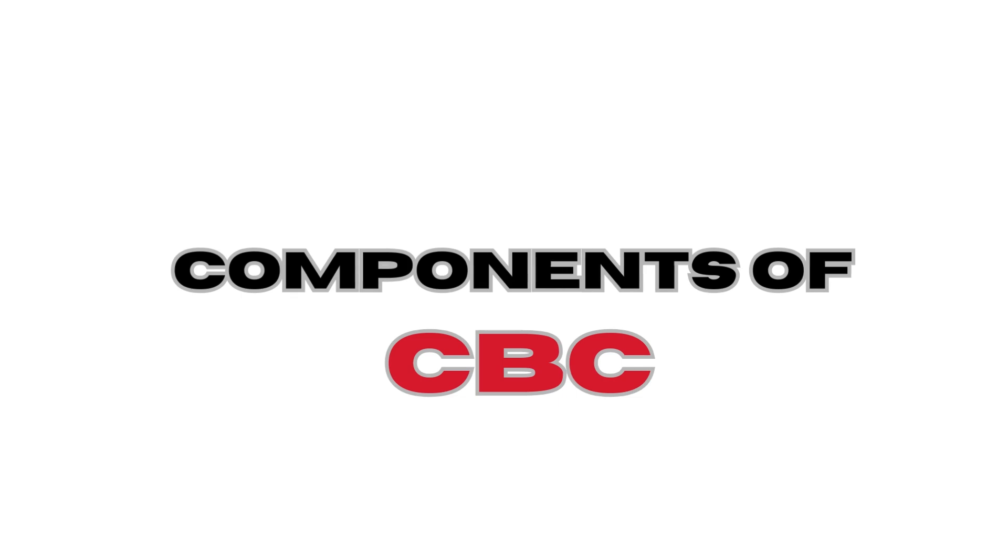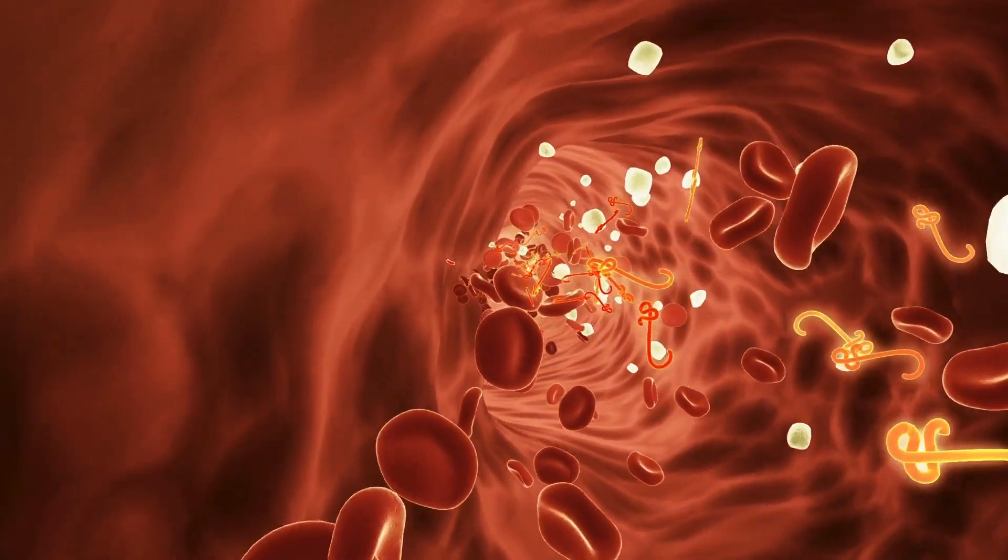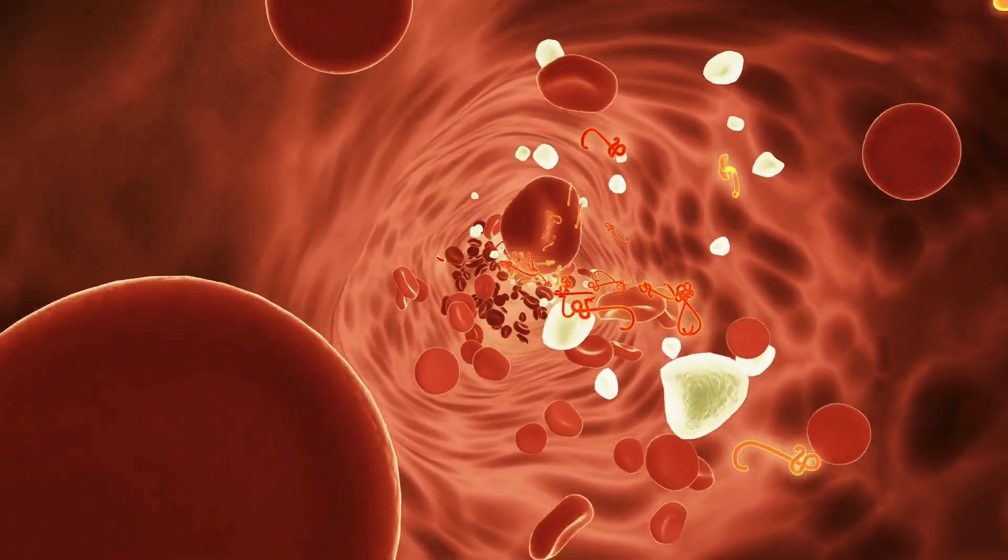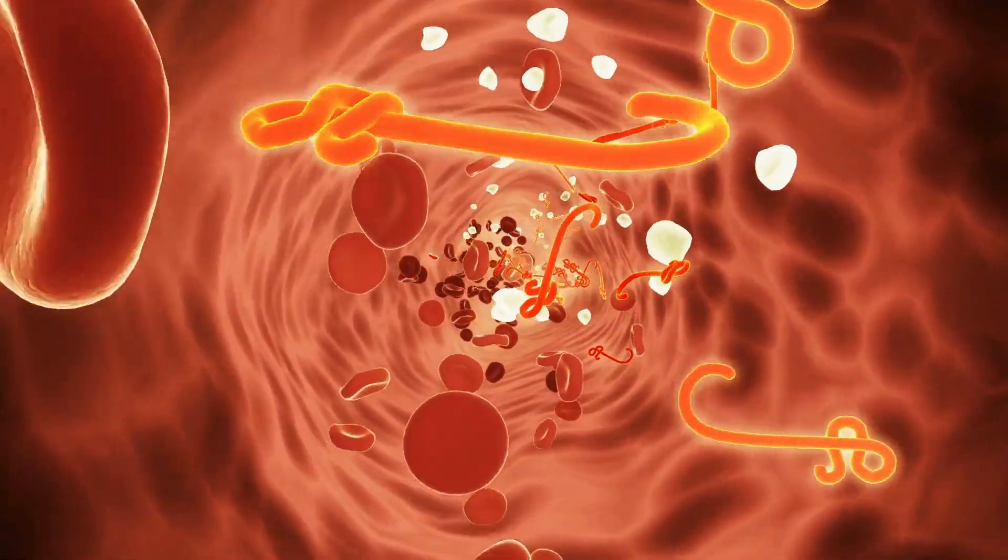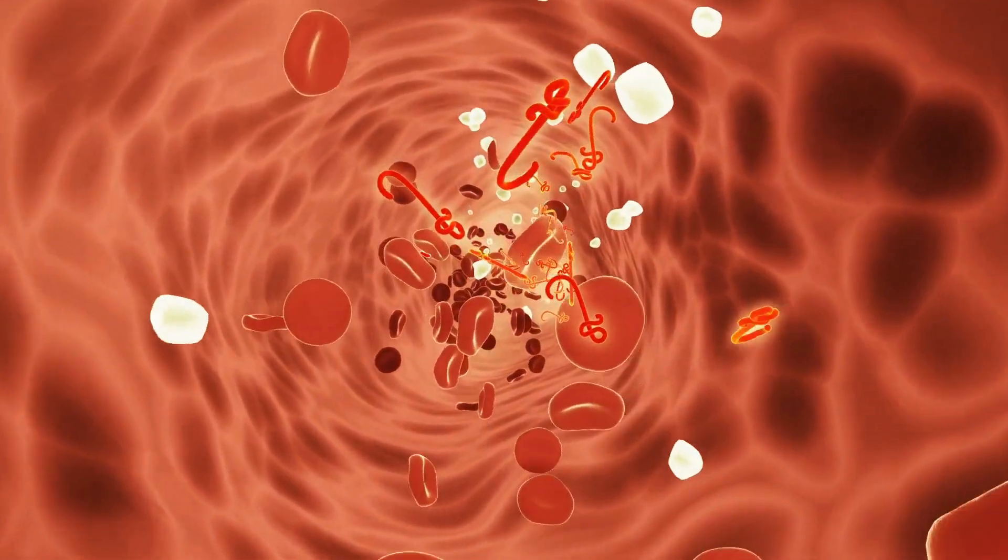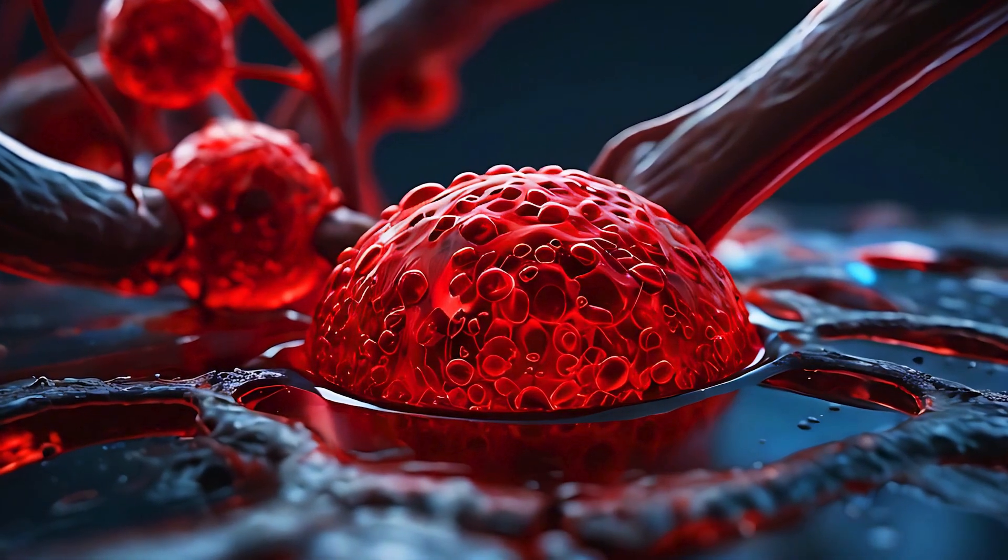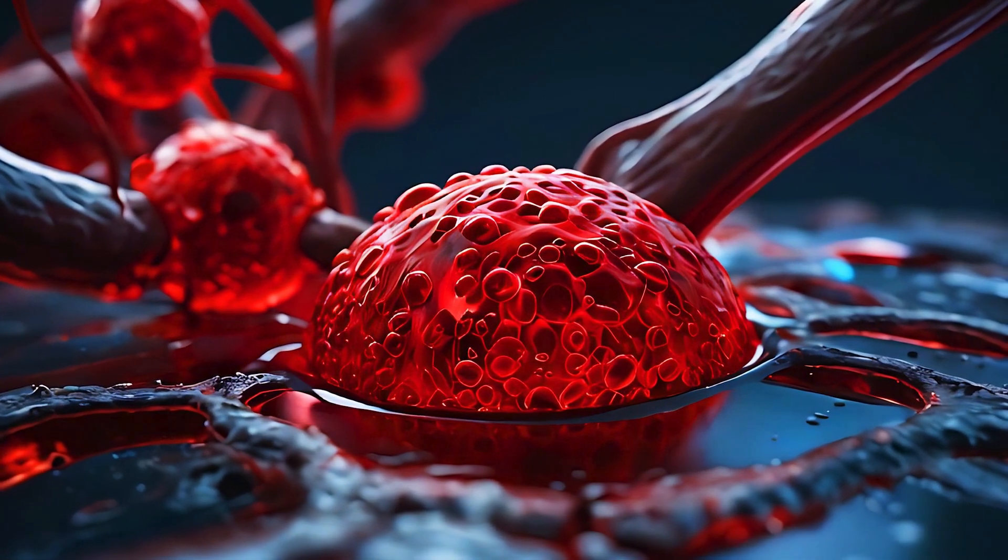Components of CBC and their significance. 1. Red blood cells (RBCs): oxygen transporters. Function: RBCs carry oxygen from the lungs to the body and remove carbon dioxide. The hemoglobin in RBCs binds oxygen and gives blood its red color.